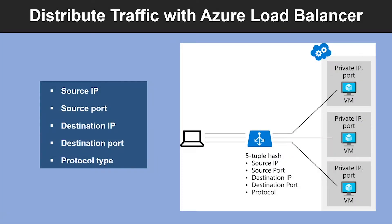Azure Load Balancer is a service you can use to distribute traffic across multiple virtual machines. You can use Azure Load Balancer to scale applications and create high availability for your virtual machines and services. Load Balancers use a hash-based distribution algorithm. By default, a 5-tuple hash is used to map traffic to available servers.